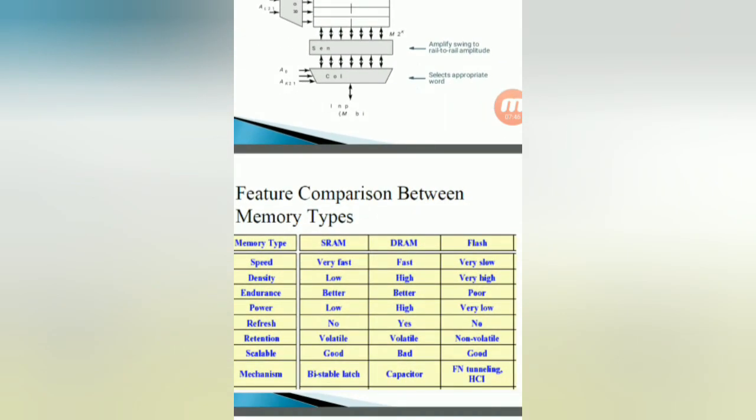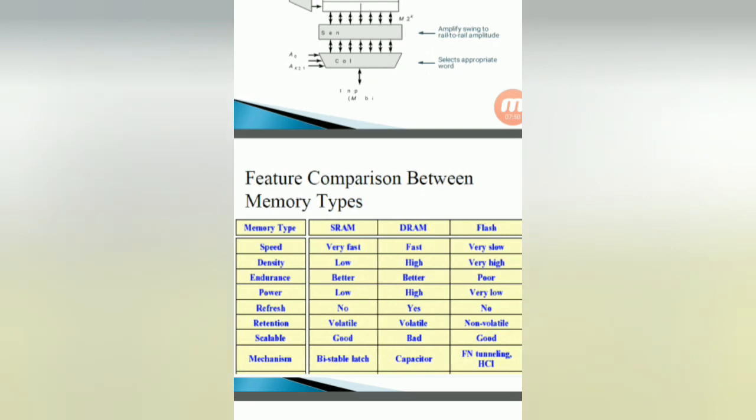So finally you can go for comparison of different types of memories: SRAM, DRAM, and flash. Speed: in case of SRAM, very fast; DRAM, fast; flash memory, very slow. Density: low, high, very high. Endurance: better, better, poor. Power: low, low, high to very low. Refresh: not required for SRAM; required for DRAM; not required for flash. Retention means its nature: volatile, volatile, non-volatile. Scalable: good, bad, good. Good in the sense that in future it will be adjustable. Mechanism: bistable, capacitor, tunneling.